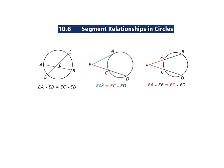The second case is the same type of concept, except now you're going to do part times the whole. This applies when your vertex is on the outside. So you take the part times the whole segment — for example, EC is the part times the whole segment ED.